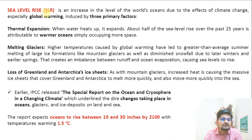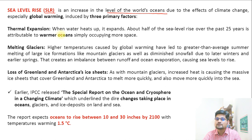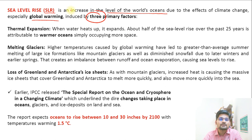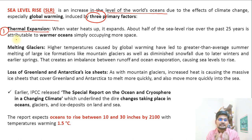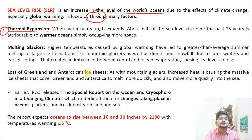Sea level rise, in short called SLR, is an increase in the level of the world's oceans due to the impacts of climate change, especially global warming, which is induced by three primary factors. The first is thermal expansion — when water heats up, it expands, and about half of the sea level rise over the past 25 years is attributed to warmer oceans occupying more space.